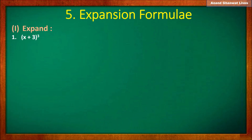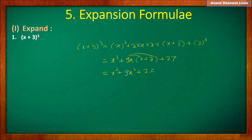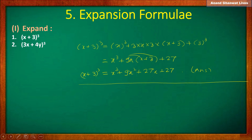The first example is the cube of x plus 3. The first term is x and the second term is 3. Using the formula: cube of x plus 3 equals x cubed, plus 3 into x into 3 into bracket x plus 3, plus the cube of 3. This equals x cubed plus 9x into x plus 3, plus 27. Expanding: x cubed plus 9x squared plus 27x plus 27.